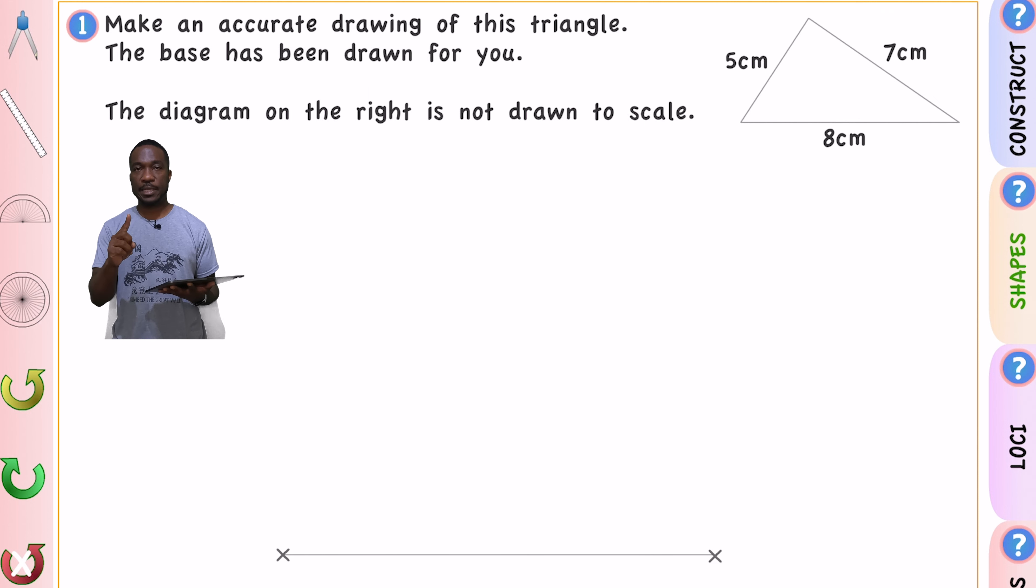We're going to construct triangles with all three sides given, triangles with two sides and an angle given, and last of all with two angles given on one side. You will need a ruler, a pair of compasses, and a protractor for this one. Let's jump right into this first question.